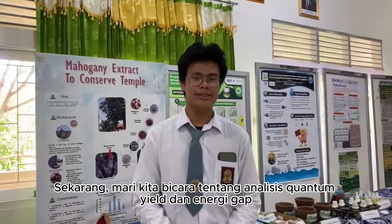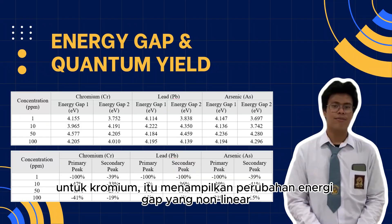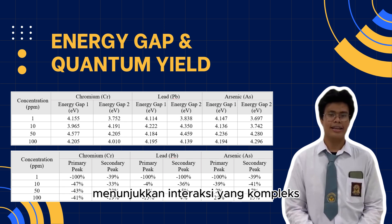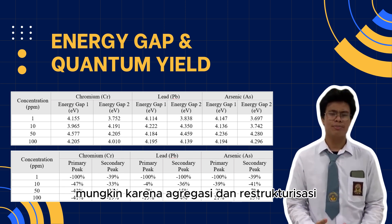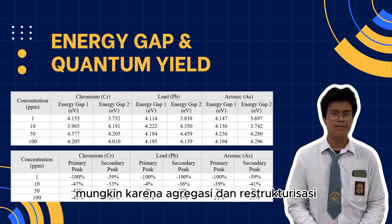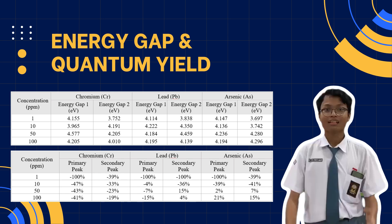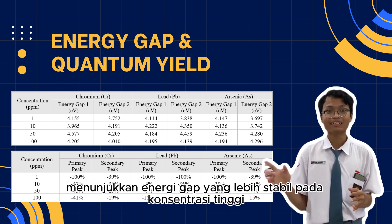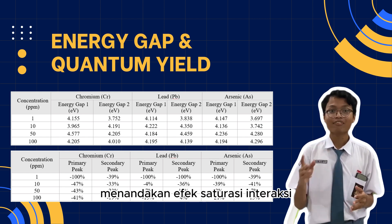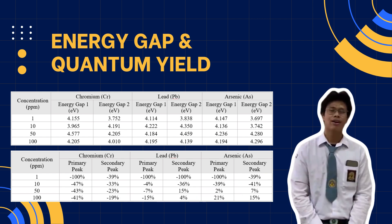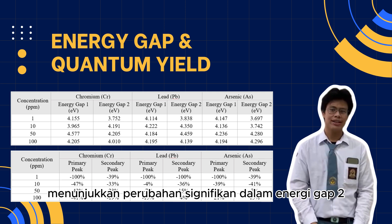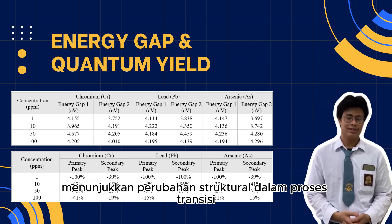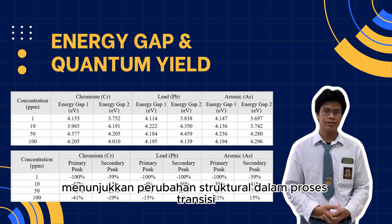Regarding quantum yields and energy gap analysis: chromium displays non-linear energy gap changes, indicating complex interactions possibly due to aggregation and restructuring. Lead shows a more stable energy gap at high concentration, suggesting saturation of interaction effects. For arsenic, it shows significant shifts in energy gap at medium concentration, suggesting structural changes in the transition process.